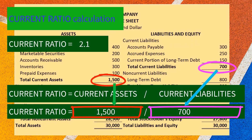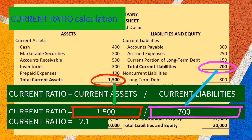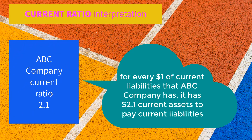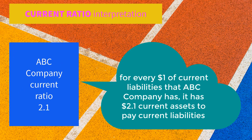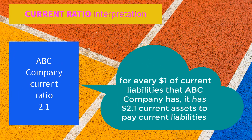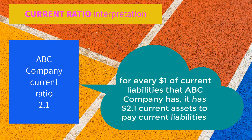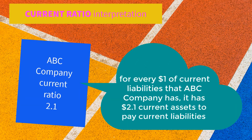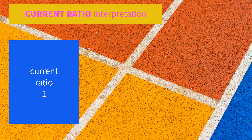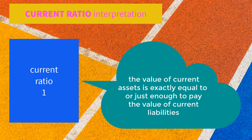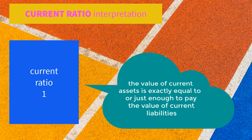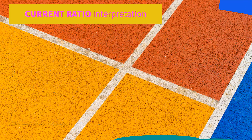The current ratio for this firm is 2.1. A current ratio of 2.1 means that for every $1 of current liabilities the company has, it has $2.1 in current assets as of this year. A current ratio of 1 indicates that the value of its current assets is exactly equal to, or just enough to pay, the value of its current liabilities.